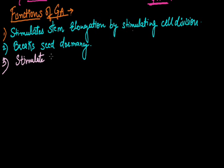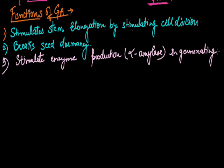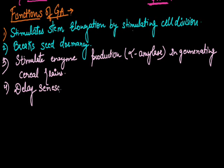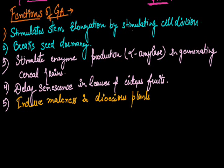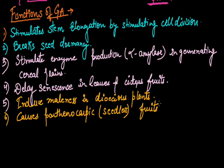So it breaks the dormancy and promotes the seed to develop into plant. Next, it stimulates enzyme production, mainly alpha-amylase in germinating cereal grains. The next function is it delays senescence in leaves and citrus fruits.